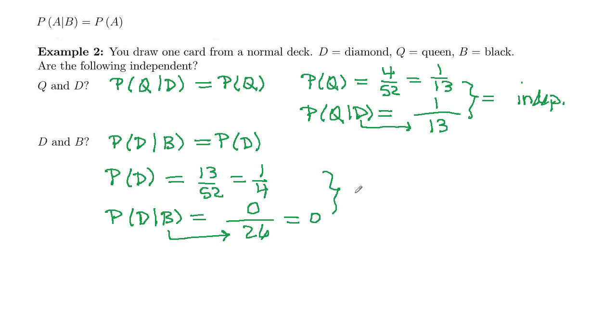And we can see that zero here is not equal to one-fourth. So these two events are dependent. So if the two probabilities are equal, they're independent. If they're not equal, the events are dependent.